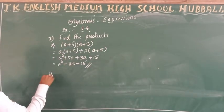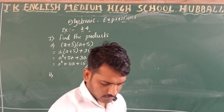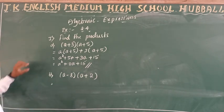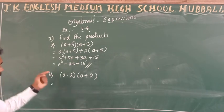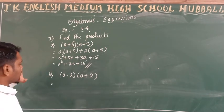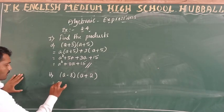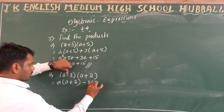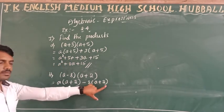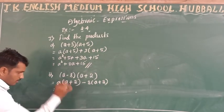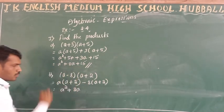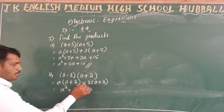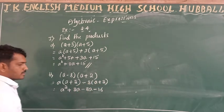Let us go to question b: (a − 8) into (a + 2). In the first question both sides were plus; in the second question one is minus and the other is plus. The same method applies — write 'a' outside, (a + 2) inside, then minus sign, then (a + 2) again inside the bracket. Multiply: a into a gives a squared, a into 2 gives 2a.